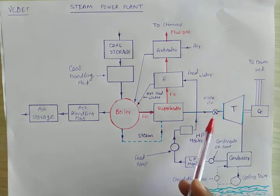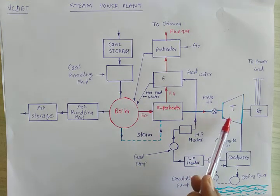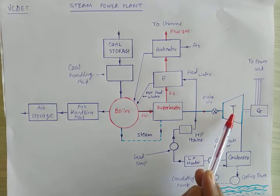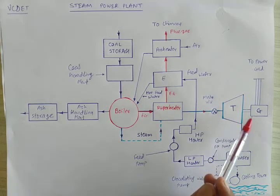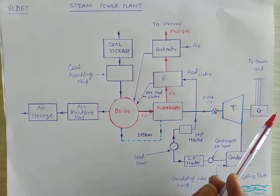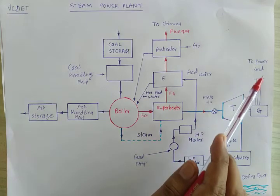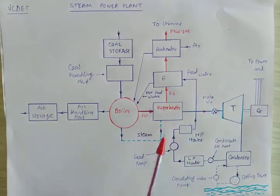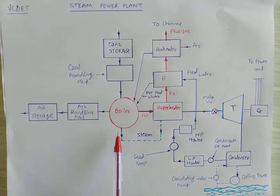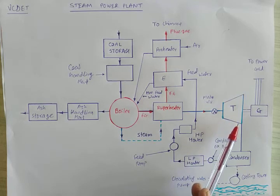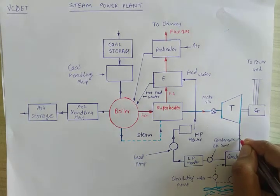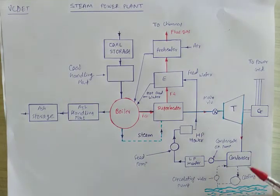When steam impacts on the blades of the turbine, they start to rotate. The blades are mounted on the shaft of the turbine, and that shaft is coupled to the generator. The mechanical energy is converted into electrical energy on the principle of electromagnetic induction, and finally we get electricity which is forwarded to the power grid. Some steam leaves the turbine and goes into the condenser, where it is condensed and converted into water.